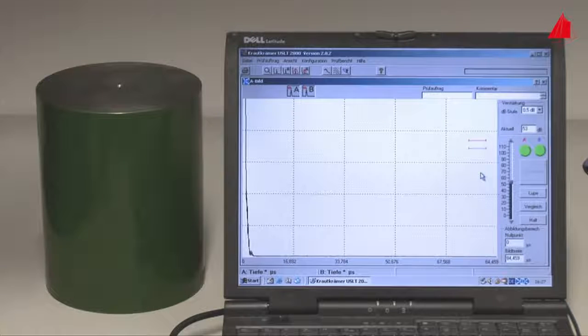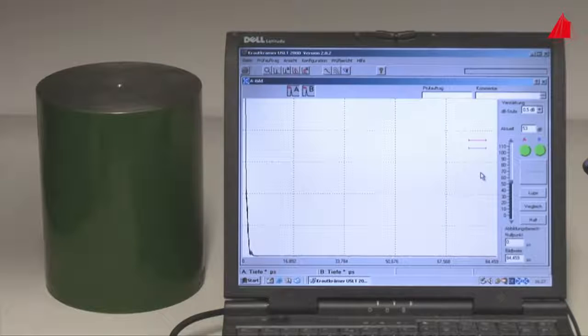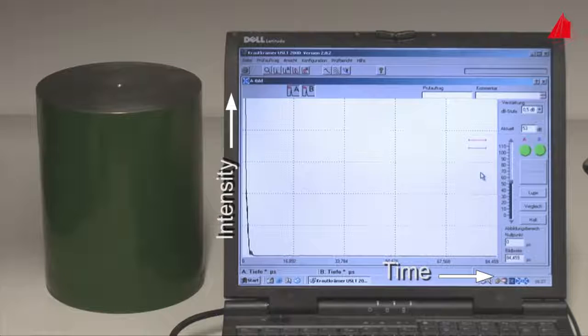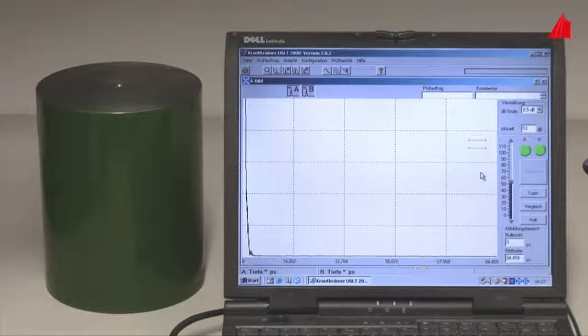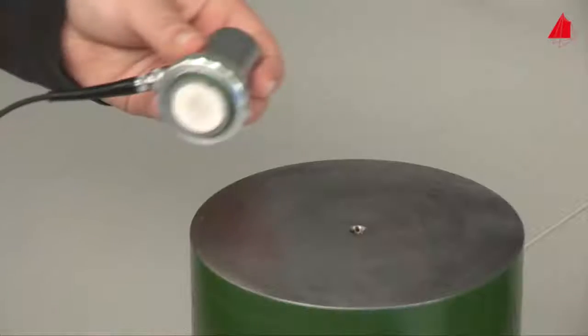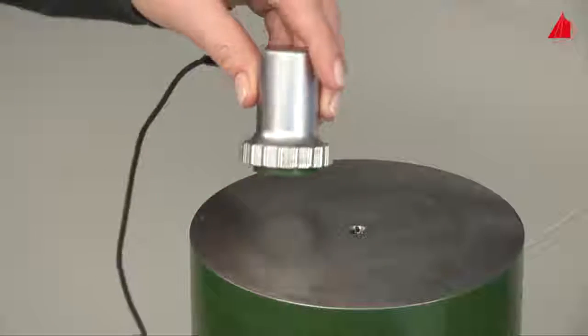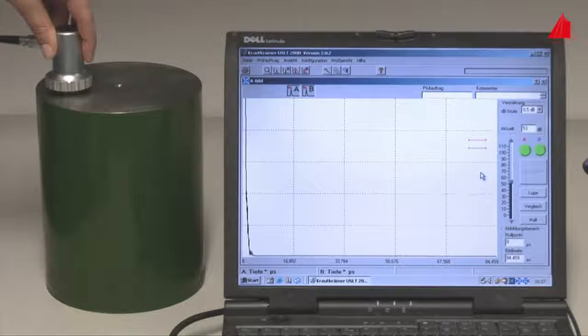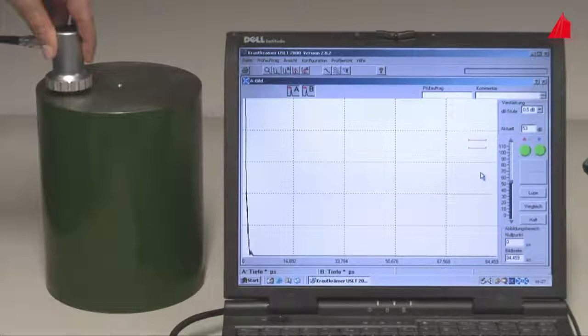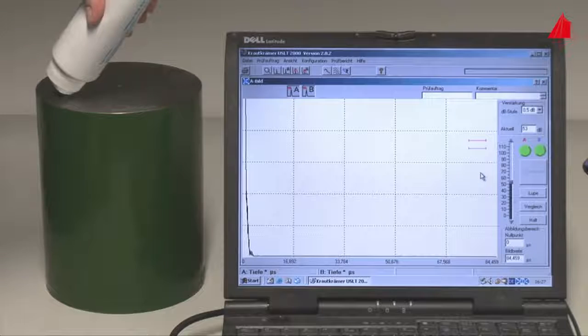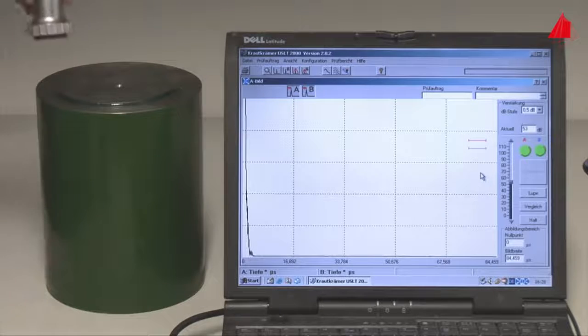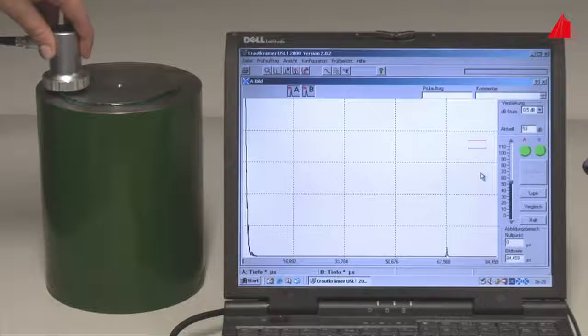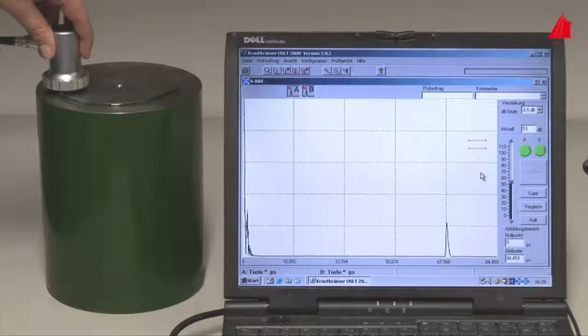A computer operates the probe via a plug-in card and power electronics. On the monitor, the intensity is plotted upwards and the time is plotted to the right. After placing the probe on top of the cylinder, initially no echo at all may be seen on the monitor. The reason for this is the too small contact area between the probe and the workpiece. Only with the use of a gel, the so-called couplant, the ultrasonic pulses can get into the workpiece and can also go back into the probe. Now the backwall echo turns up on the monitor.